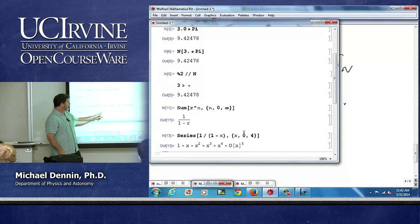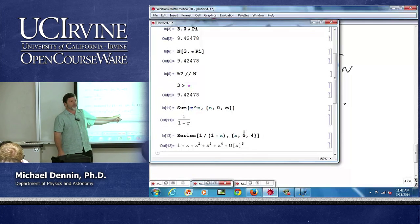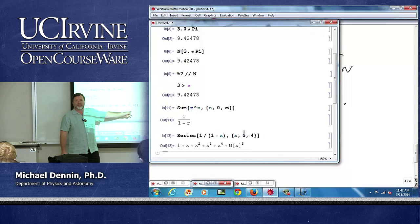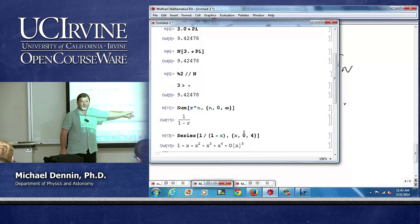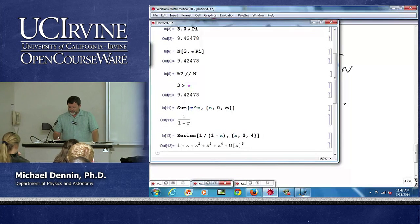And sure enough, I get 1 plus x plus x squared plus x cubed plus x fourth plus order x the fifth, which is enough terms in physics. We know it's never going to change, so it's just plus x to the n all the way out.